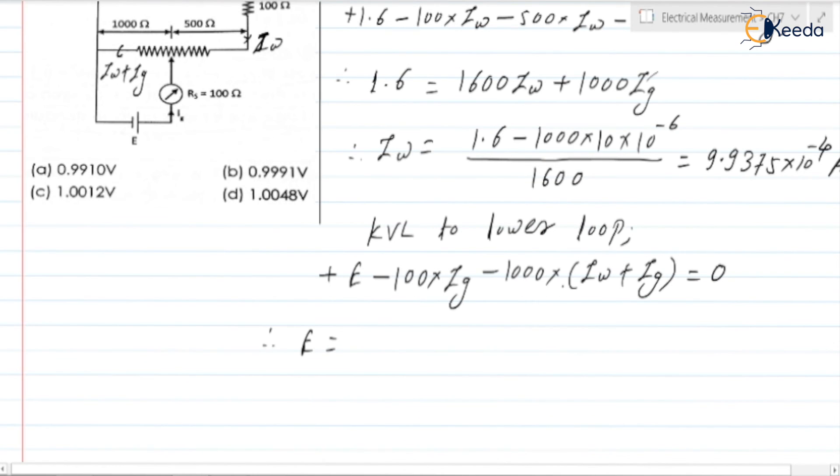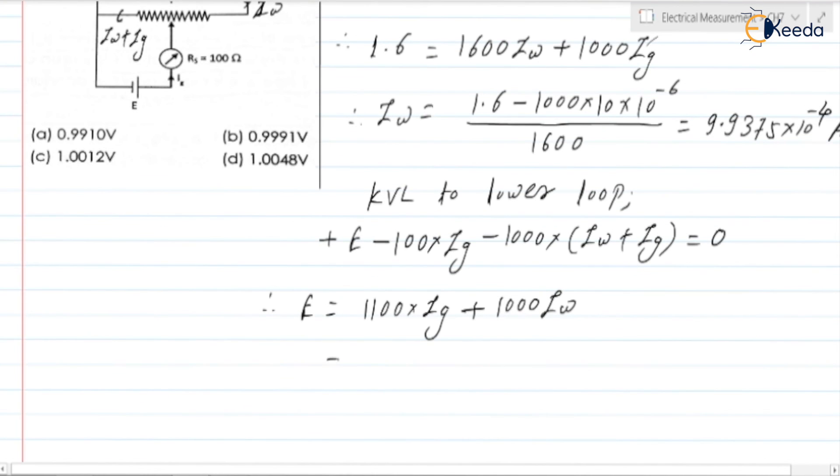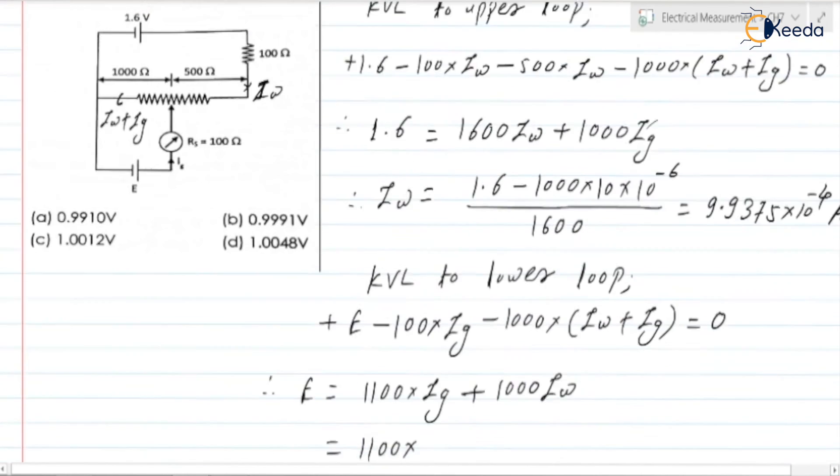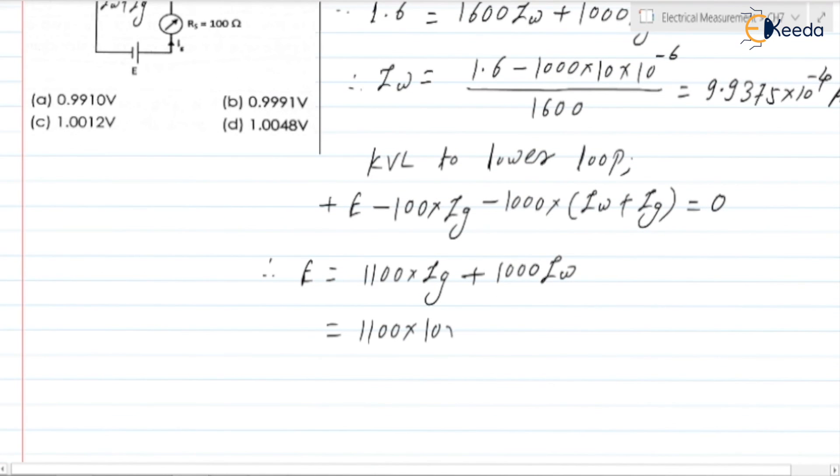It is 1100 into Ig plus 1000 into Iw. We know Iw, we know Ig, so we can write 1100 into Ig is 10 into 10 to the power minus 6, plus 1000 into Iw that is 9.9375 into 10 to the power minus 4.